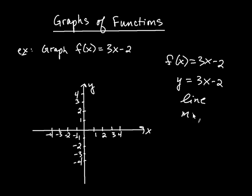I can see that the slope m is equal to 3, which I can think of as 3 over 1. And b, the y-intercept, is negative 2. So graphing this line, well, b is negative 2. There's my y-intercept.